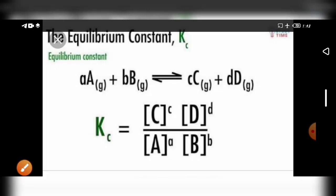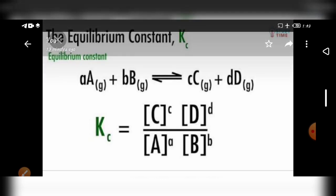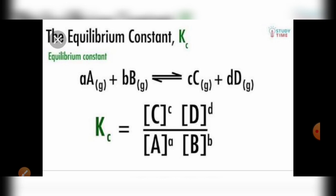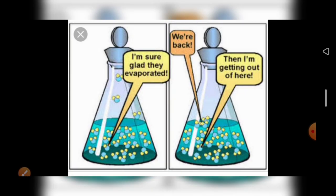Next, the equilibrium constant Kc. For a reaction A + B ⇌ C + D, the equilibrium constant Kc is written as: Kc = [C][D] / [A][B], where the concentrations are raised to the power of their stoichiometric coefficients.